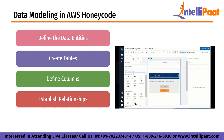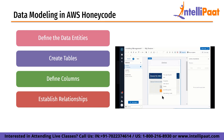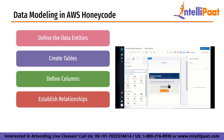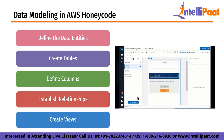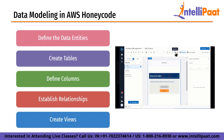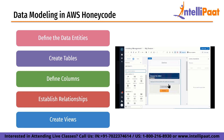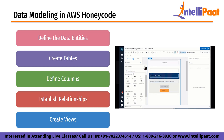Next is establishing relationships. The next step is to establish relationships between the tables, which define how data in one table relates to data in another. For example, if the app has a customer entity and an order entity, there should be a relationship that links each order to a specific customer. Finally, create views. After the tables and relationships are defined, the next step is to create views that define how the app will display the data. Views can be created for each entity or for specific tasks such as reporting or data entry.